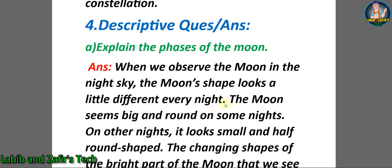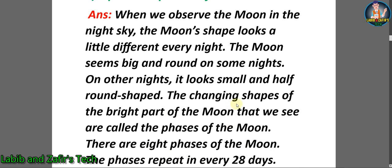The moon seems big and round on some nights. On other nights it looks small and half round shaped. The changing shapes of the bright part of the moon that we see are called the phases of the moon.